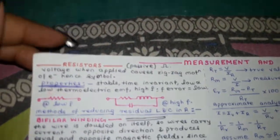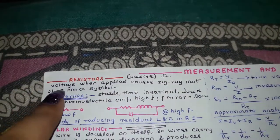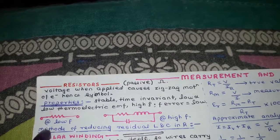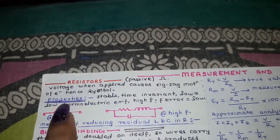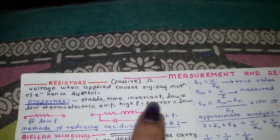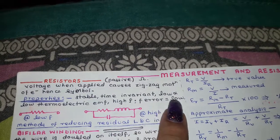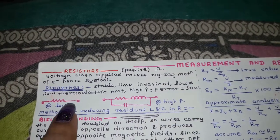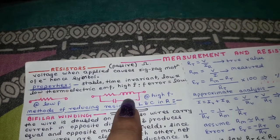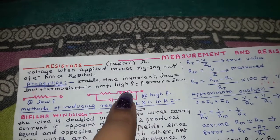Resistance is a pretty basic concept — it is a passive element with the ohm as its unit. When voltage is applied, it causes zigzag motion of electrons, which is why we have this symbol. Properties include: stable, time-invariant, low temperature coefficient, low thermoelectric EMF, higher resistivity, and low frequency error at lower frequencies.